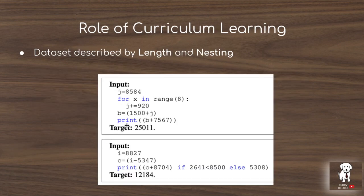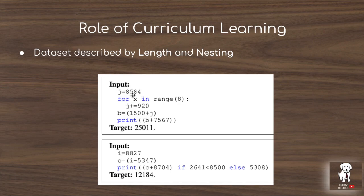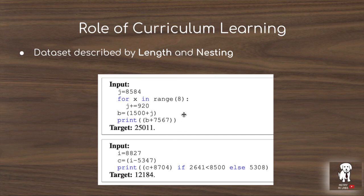The role of curriculum learning in 'Learning to Execute' involves describing program difficulty based on digit length and nesting. For example, it's easier to model '8 plus 3' than '8,584 plus 7,567'. Nesting refers to how many expressions are nested — for instance, computing j equals 8,584 plus 920 times 8 plus 1,500 and then plus 7,567 involves three nested expressions. The number of operations and their dependencies determine how challenging it is for the memory to store and evaluate the program.